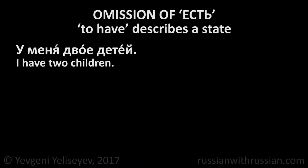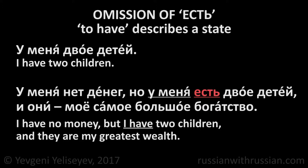У меня двое детей — I have two children. I'm a father of two children. That is my state, my status. But: у меня нет денег, но у меня есть двое детей, и они — мое самое большое богатство — I have no money, but I have two children, and they are my greatest wealth. Here I want to say that I don't have money, but I do have children.